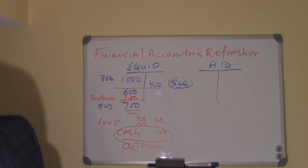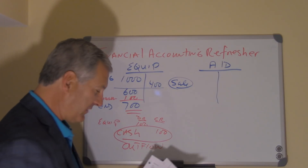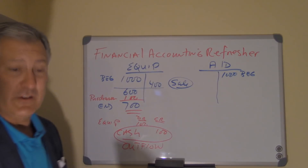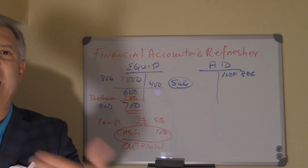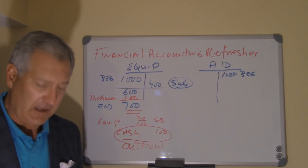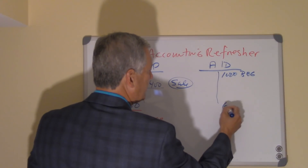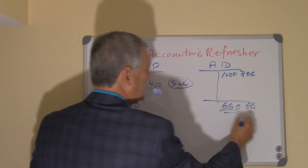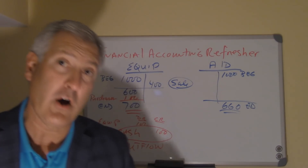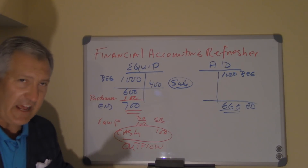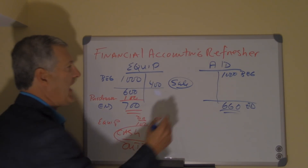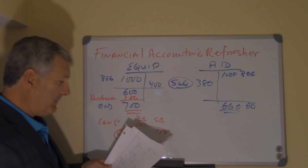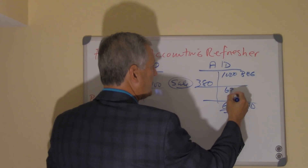Let's look at our accumulated depreciation account. Assume a beginning balance of $1,000 — remember, it has a normal credit balance as a contra-asset account. At the end of the year, the ending balance is $660. We know there was a sale of an asset, and when they sold that asset, they debited the accumulated depreciation account for $380, which brought the balance down to a preliminary balance of $620.